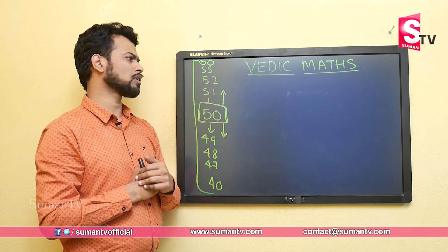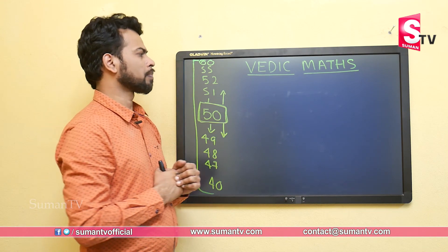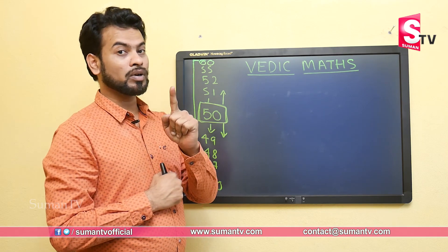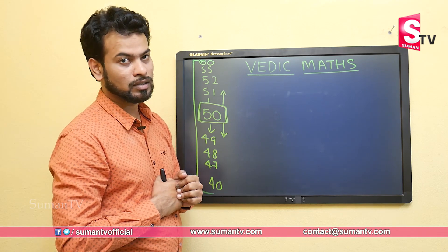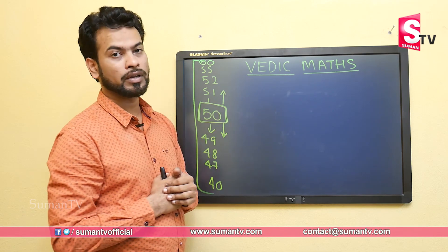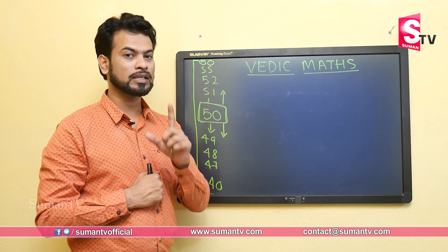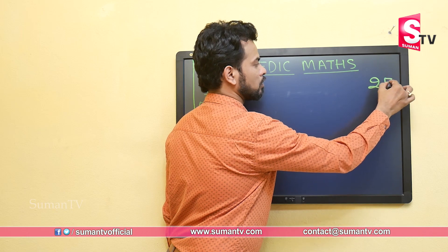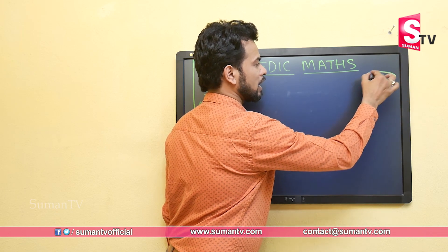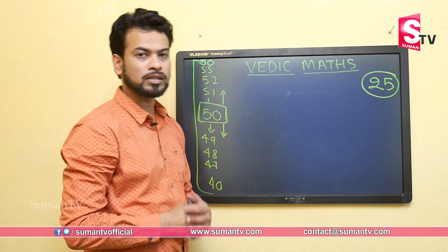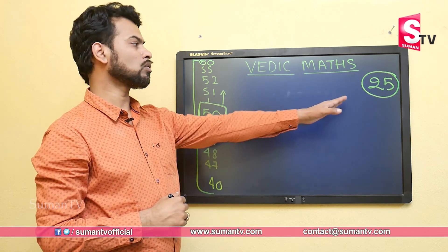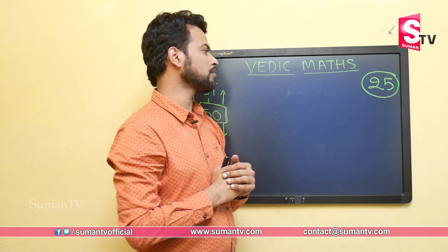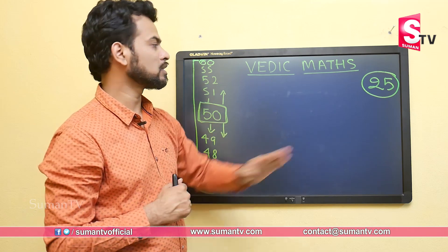Before the first example, we need to remember a magic number. For this trick we are using a magic number, and that magic number is 25. Keep in mind: the magic number is 25. I will explain what you need to do with this 25.